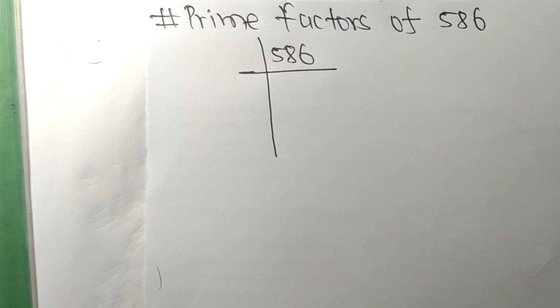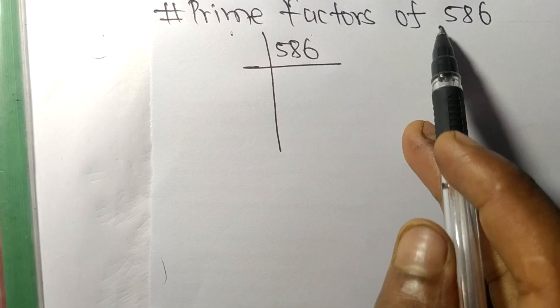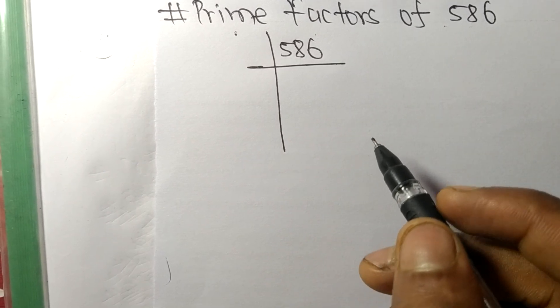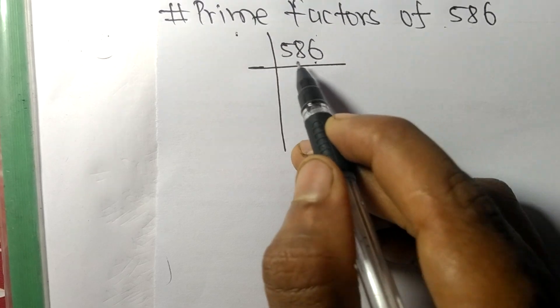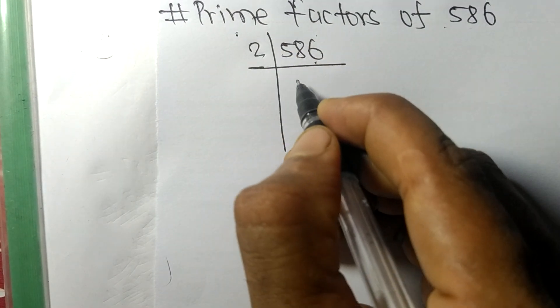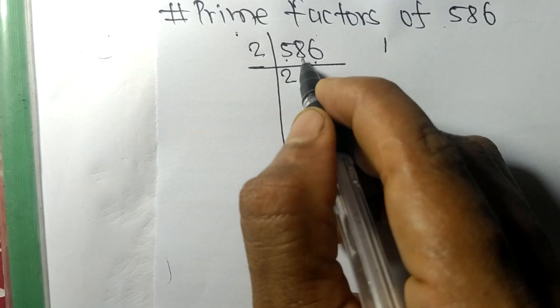Today in this video, we shall learn to find the prime factors of 586. It ends in number 6, so this whole number is divisible by 2. 2 times 2 is 4, remainder 1, and 8... 18, 2 times 9 is 18, and 2 times 3 is 6.